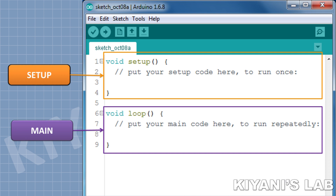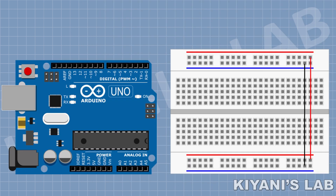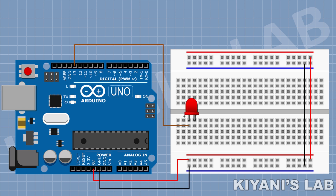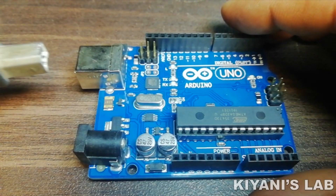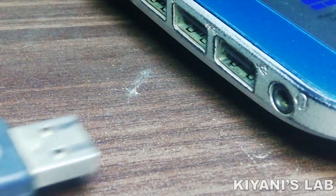Now let's make our first basic project using Arduino which is a blinking LED. First connect the 5 volt pin of Arduino to the positive supply rail of the breadboard. Now connect the ground pin of Arduino to the negative supply rail. Connect the LED and connect its positive pin to pin D13 of Arduino. Now connect a 100 ohm resistor with one pin to the negative pin of the LED and the other pin to the negative supply rail of the breadboard.